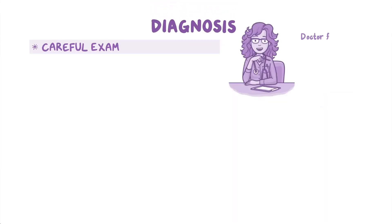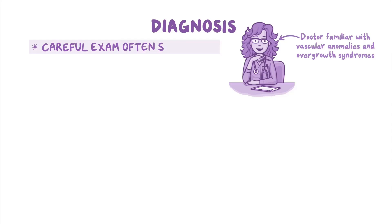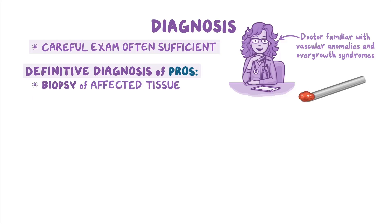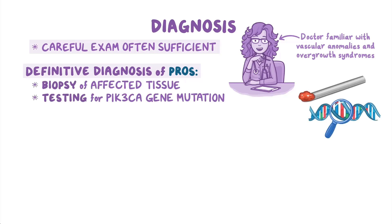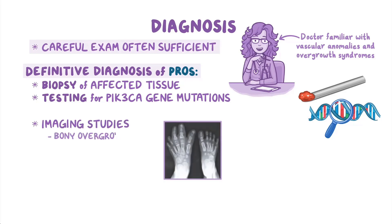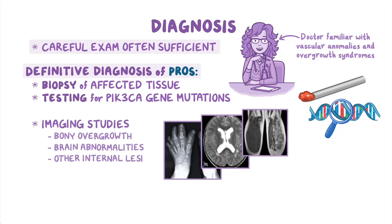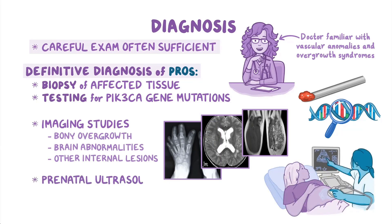Careful exam by a doctor familiar with vascular anomalies and overgrowth syndromes is often sufficient to make a clinical diagnosis. However, the definitive diagnosis of PROS involves a biopsy of affected tissue to identify a PIK3CA mutation. Imaging studies may be performed to detect bony overgrowth, brain abnormalities, or other internal lesions. Prenatal ultrasound sometimes detects growth abnormalities associated with these conditions.